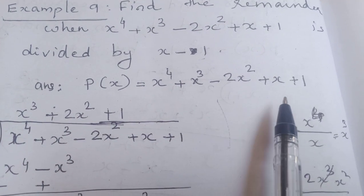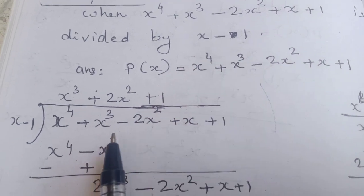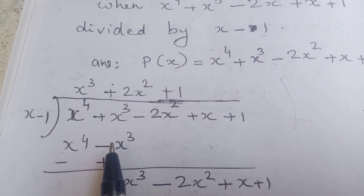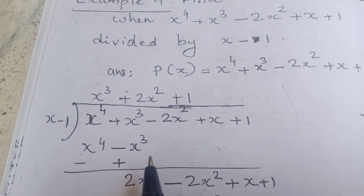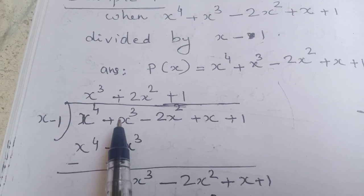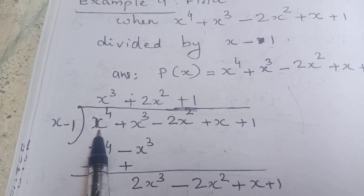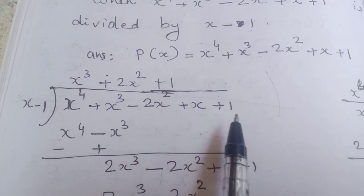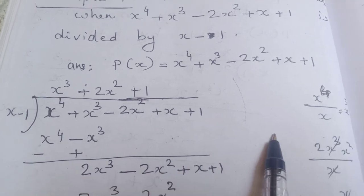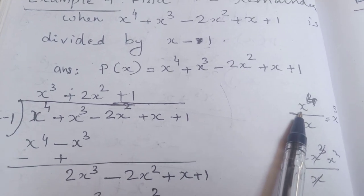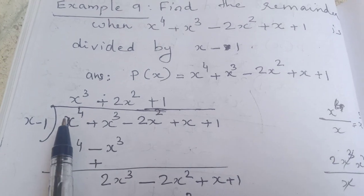After writing p(x), you have to divide by x − 1. As the last video told, this is a continuation of those examples. The first term x⁴ is divided by the first term of the divisor, x, giving x³.